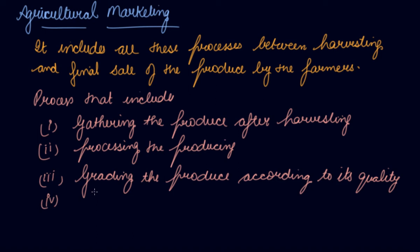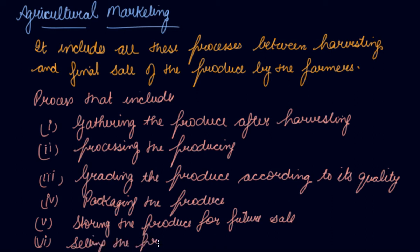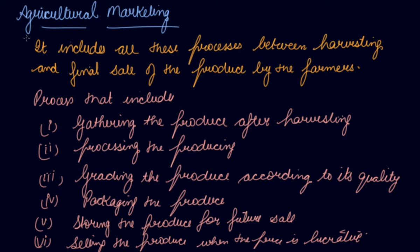Fourth is packaging the produce — you pack your produce. Fifth is storing the produce for future sale. And sixth is selling the produce when the price is lucrative, meaning when the price is according to the wish of the farmer. These are all the marketing activities that form agricultural marketing.